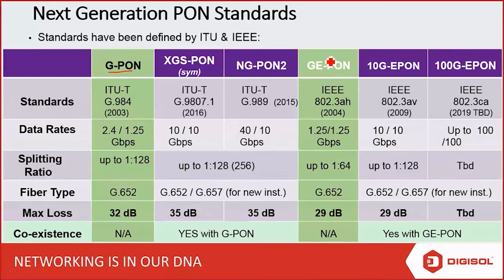GE-PON — where 'E' stands for Ethernet — uses the Ethernet protocol. The second difference is the data rates. In GPON, the download data rate is 2.4 Gbps and the upload data rate is 1.25 Gbps. GE-PON has symmetric upload and download speeds, which is 1.25 Gbps. Remember, the data rate is half in GE-PON compared to GPON download.